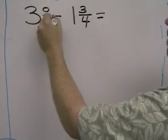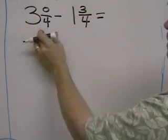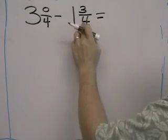The fraction will be 0 fourths. So 3 is the same thing as 3 and 0 fourths minus 1 and 3 fourths.